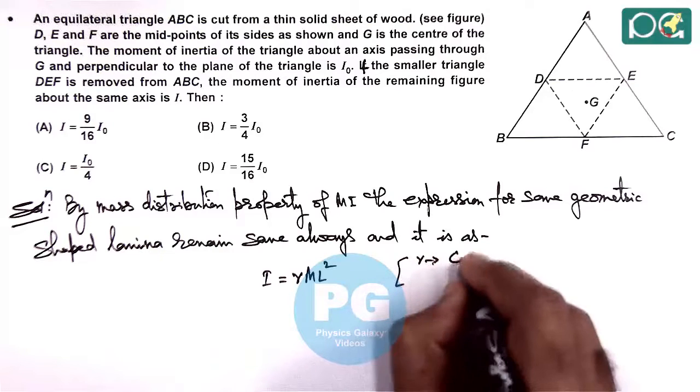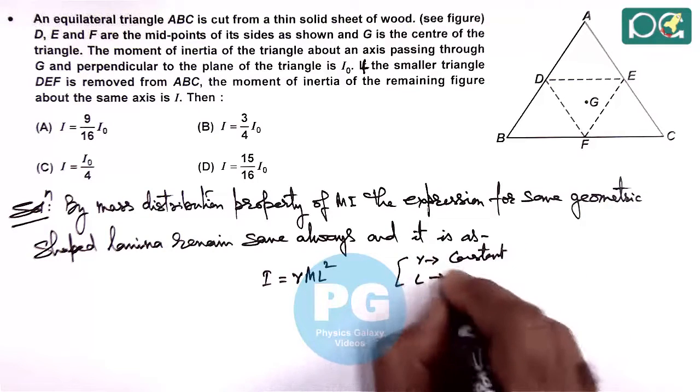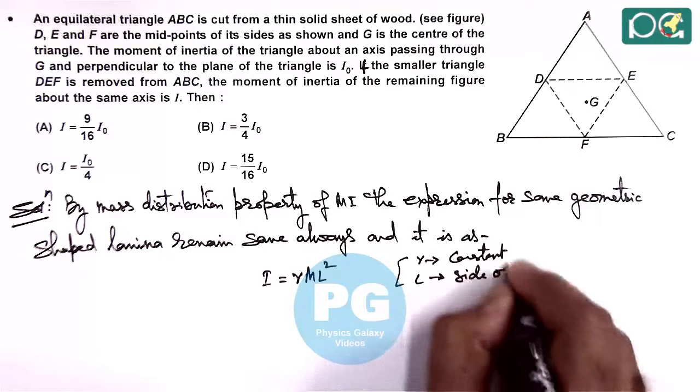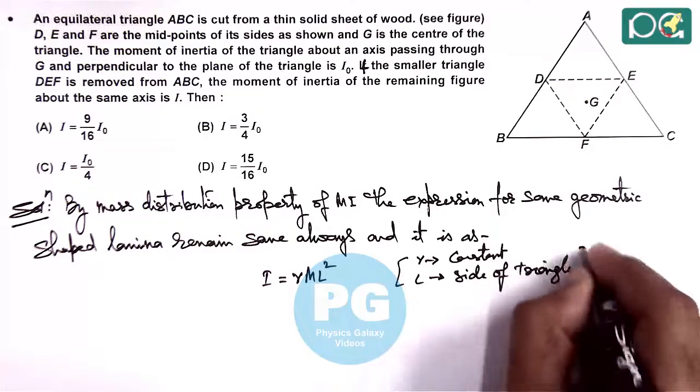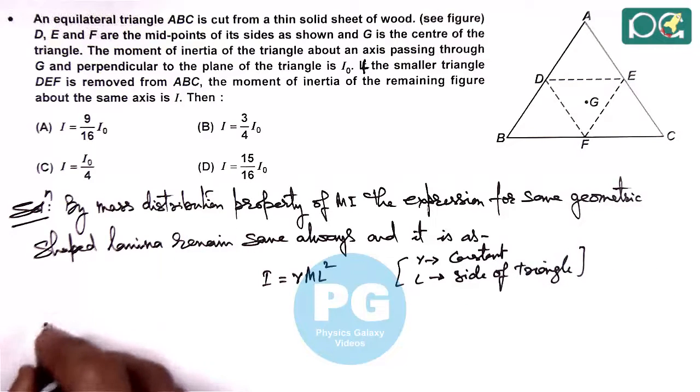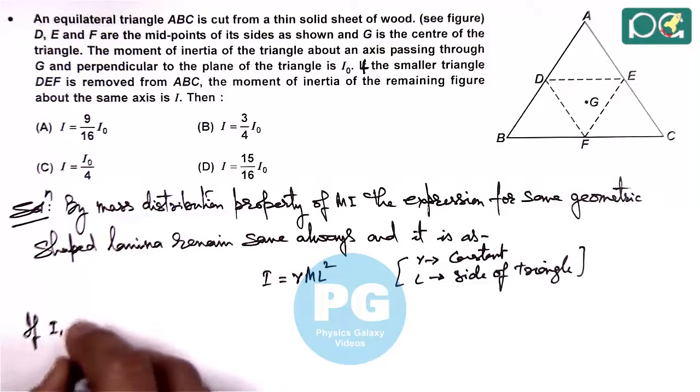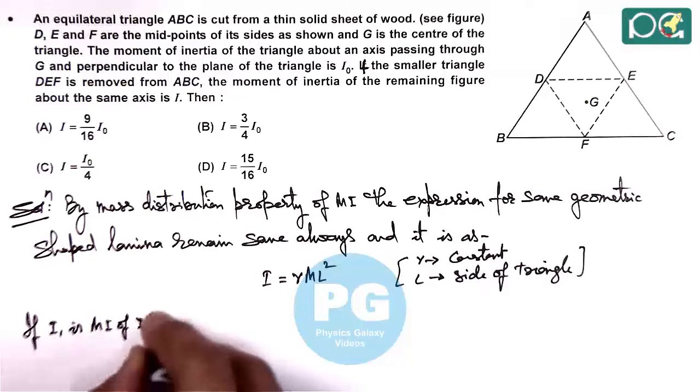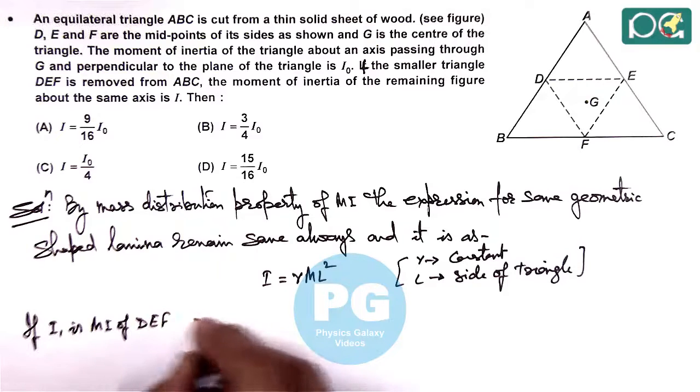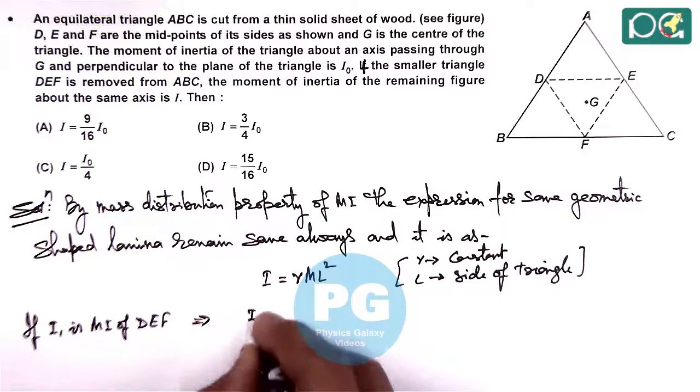So in this case here, if I₁ is the moment of inertia of DEF, this implies we can write I₁ by I₀ is equal to, here γ gets cancelled out.